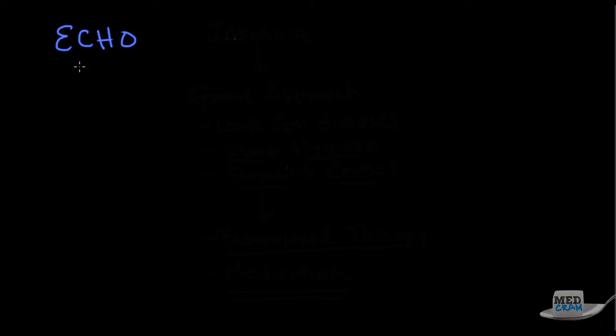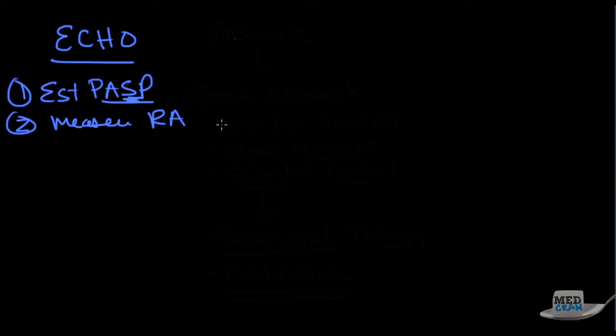Echocardiogram is very helpful. What is echo good at doing? Number one, it's good at estimating the pulmonary artery systolic pressure, not the mean, but the systolic pressure. We talked about that before. Number two, it can also measure things like the right atrial size and the right ventricular size to show how long this has been going on for. Because the pressures on the right side are higher than that on the left, the question then becomes, is there a patent foramen ovale? And to do that, you're going to have to inject bubbles so you can do a bubble study.